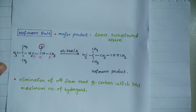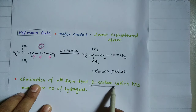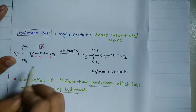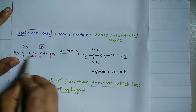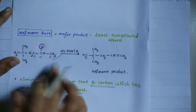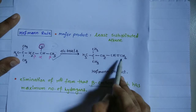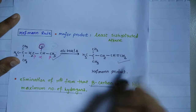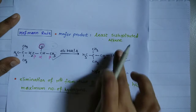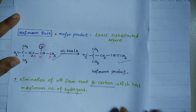For the Hoffman rule, the trick is the elimination of H⁺ from the beta carbon which has the maximum number of hydrogens. If you have two hydrogens here and three hydrogens there, you select from the carbon with three hydrogens, remove HX, and you get the double bond — this gives the least substituted alkene, which we call the Hoffman product.